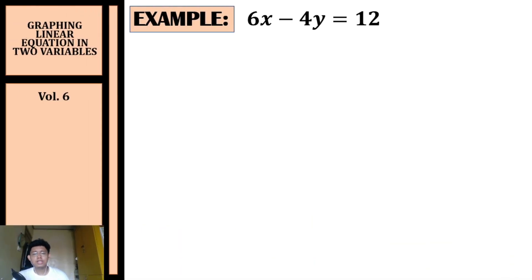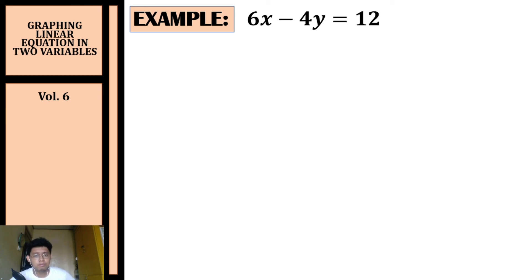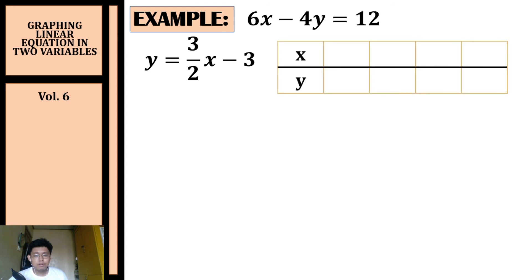Let's have our last example for today. We're going to graph six x minus four y equals twelve. Step one: rewrite this in slope-intercept form, giving us y equals three-halves x minus three. Step two: prepare our table of values.